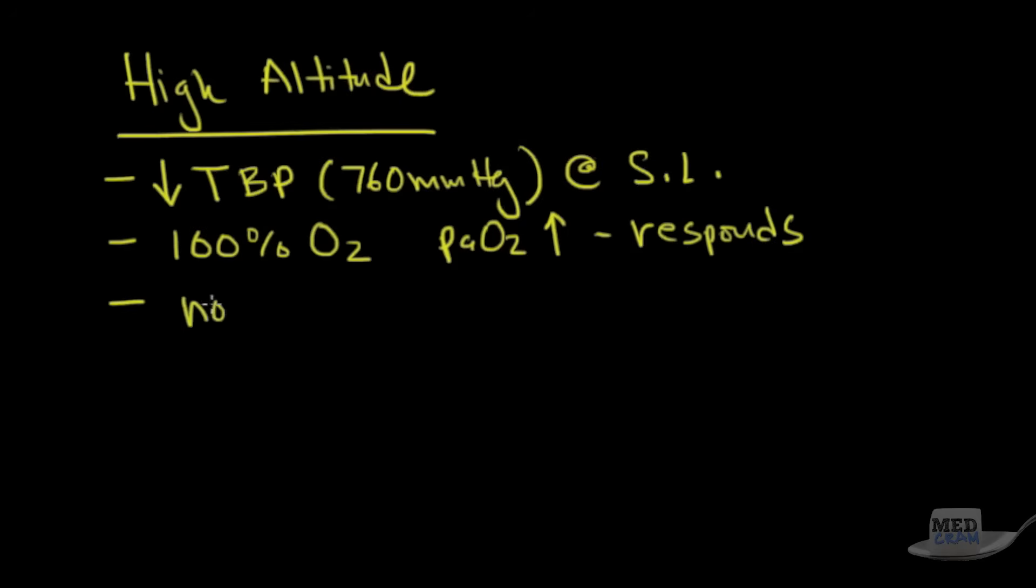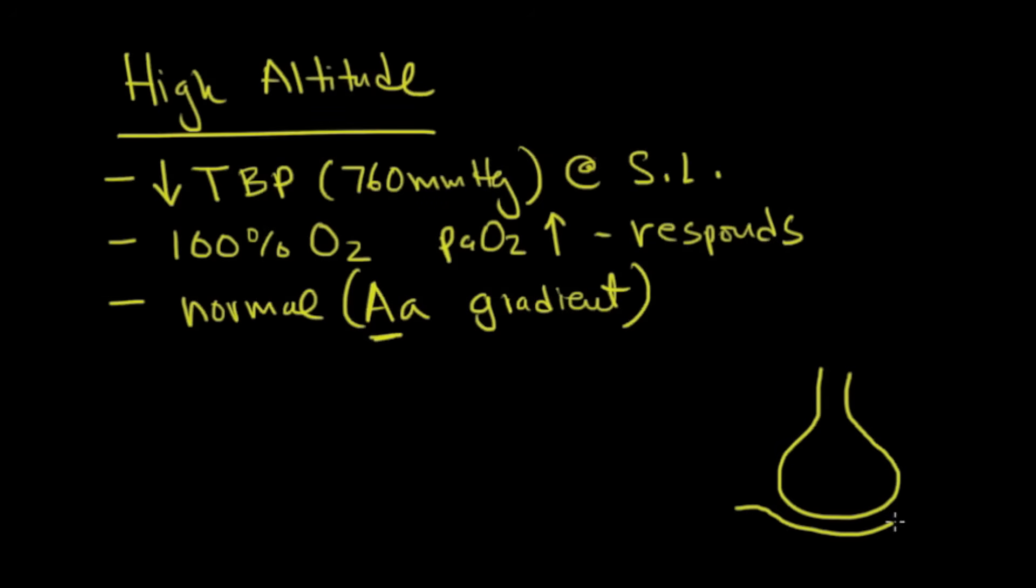The other thing that we see here is something called a normal AA gradient. So what is an AA gradient? Capital A stands for the alveolus. If you know what a cross-sectional area of an alveolus looks like and there's a blood vessel going by and a capillary, the AA gradient, this is the capital A and this is the lowercase a, it's simply talking about the difference in the O2 here in the alveolus versus here in the capillary.